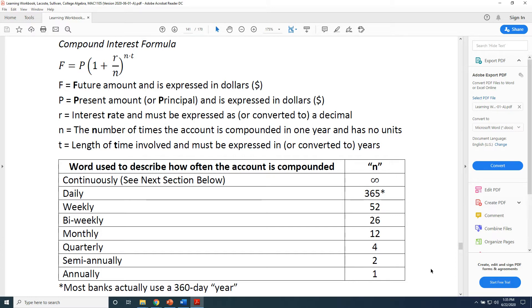F equals P times the quantity 1 plus r over n, raised to the n times t power. F represents the future amount of money and is expressed in dollars. P is the present amount of money and is also expressed in dollars. Sometimes that is referred to as the principal.